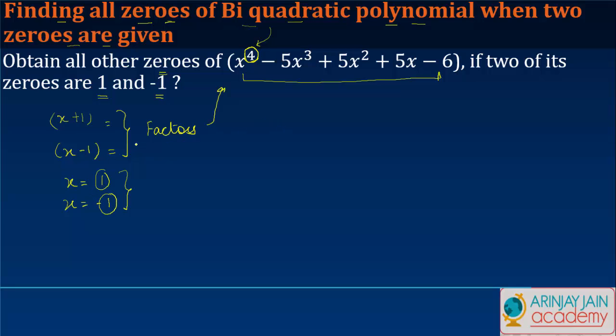In that case, if we divide this polynomial by x+1 and x-1, what we will get is the remaining part of the polynomial, and then we can try to factorize it to get the other zeros. Now x+1 and x-1 can be written as x² - 1.